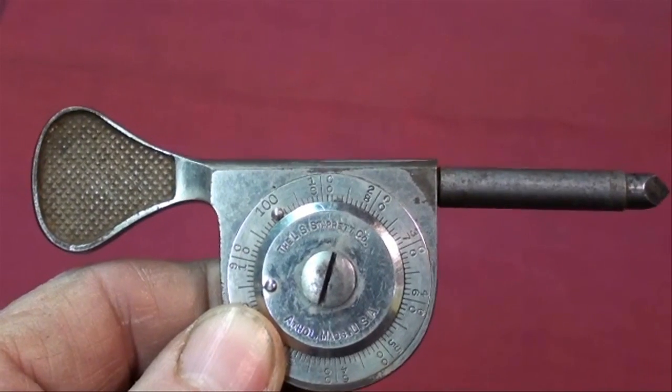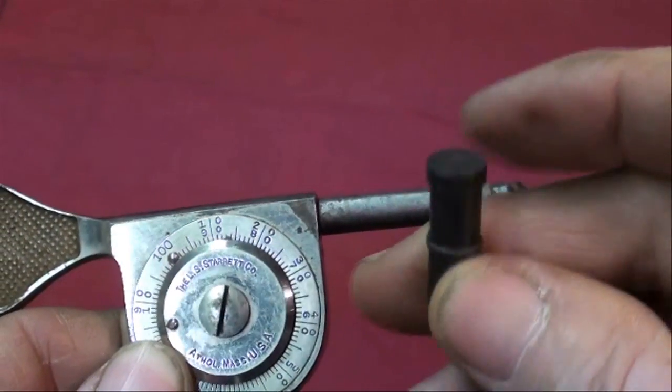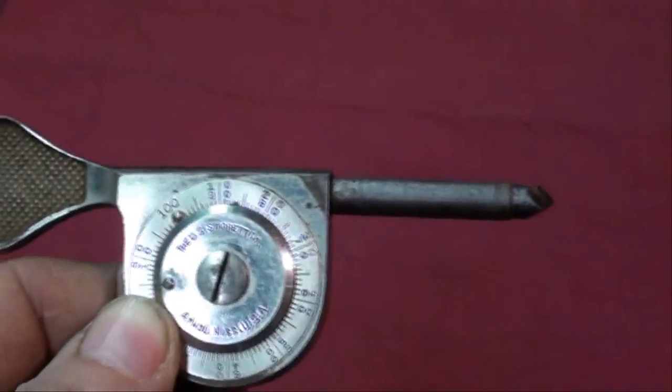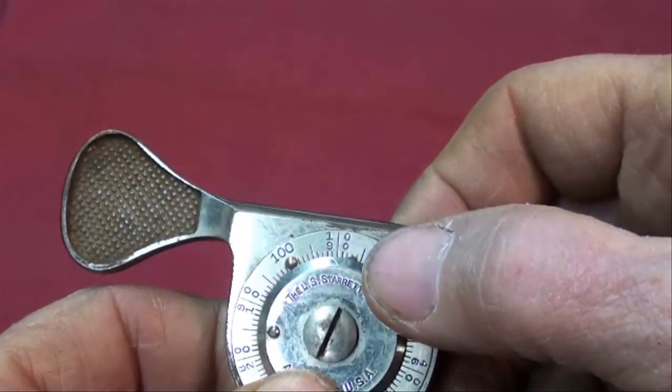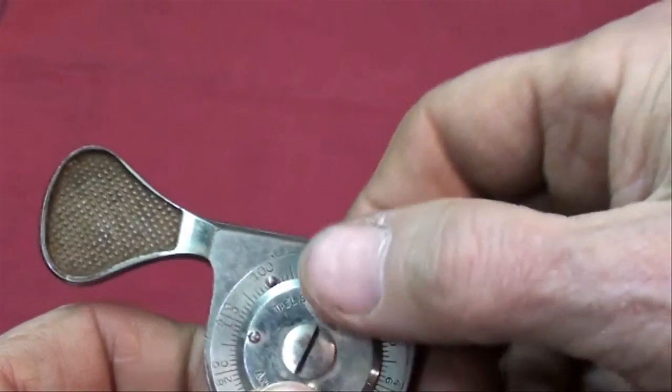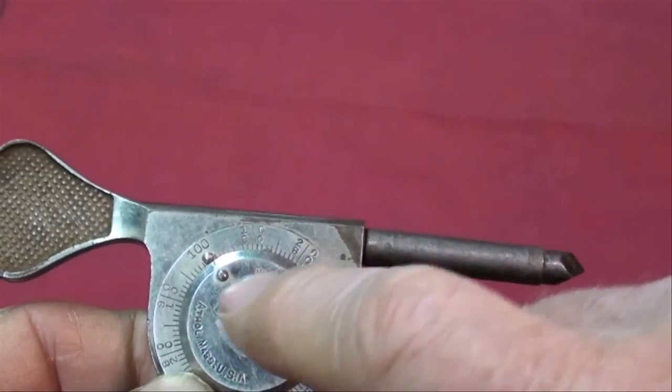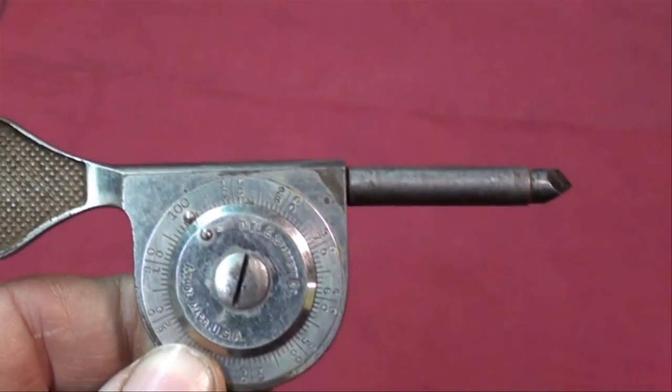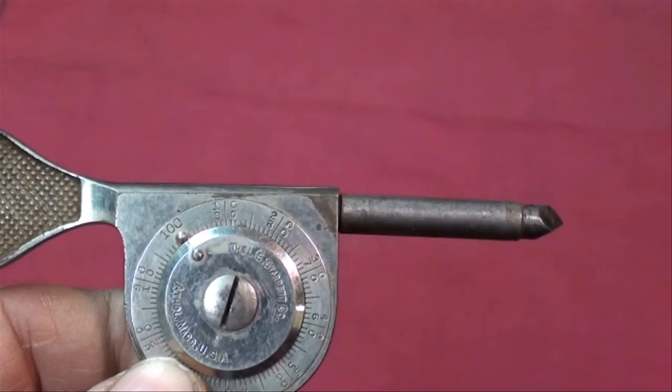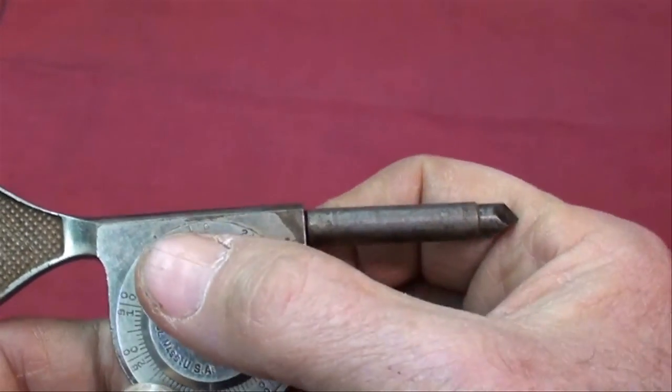I think I'll use the Starrett speed counter next. The speed counter comes with several different tips. This particular one you can set it to zero. There's a worm and a worm gear in here, so I'm going to set it to zero, and then each full revolution is 100 rpm. The reason for these little buttons here is that in the olden days, men were often checking the speed of line shafts and other things above their head, and they could feel the little bump come around with their thumb and count that way.